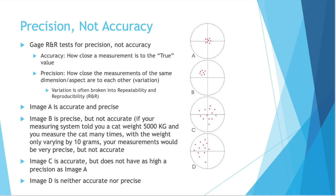And image D is neither accurate nor precise. The dots within circle D are not close to each other, so they're not very precise, and they are not centered around the crosshair, so they are not accurate either.